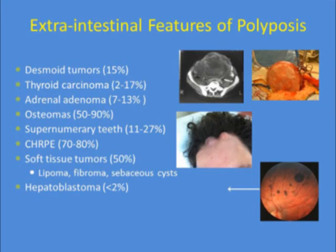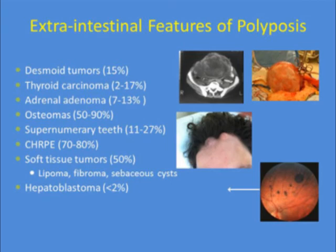I often put my hand on the head of my patient when sedating them for endoscopy, and quite commonly I feel lesions that no one else has recognized. This is one of my patients with sebaceous cysts and numerous osteomas on his head. Hepatoblastoma is another extraintestinal manifestation of FAP — a childhood tumor to consider, though uncommon in practice.